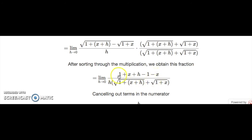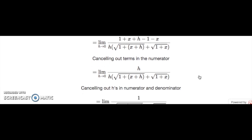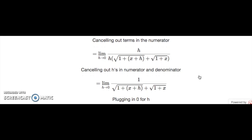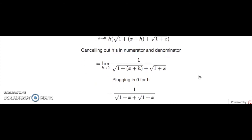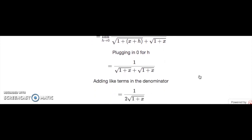We can cancel out like terms in the numerator — the x and minus x, and the 1 and minus 1. We did not distribute the h in the denominator, keeping the terms next to each other. After canceling, we end up with the limit as h goes to 0 of h all over h times (√(1+x+h) + √(1+x)). Canceling the h's leaves 1 over (√(1+x+h) + √(1+x)). Plugging in 0 for h gives 1 over (√(1+x) + √(1+x)), which simplifies to 1 over 2√(1+x). That is our derivative.